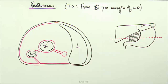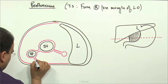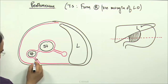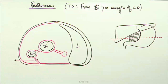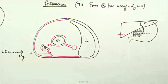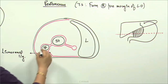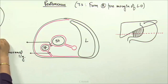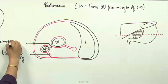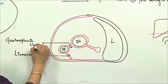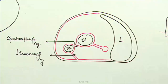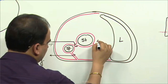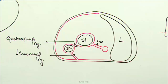Looking at the peritoneal folds in this section: the fold connecting the kidney area to the spleen is the lienorenal ligament, a derivative of the dorsal mesogastrium. The fold connecting the spleen to the stomach is the gastrosplenic ligament. And undoubtedly the fold between the stomach and the liver is the lesser omentum.